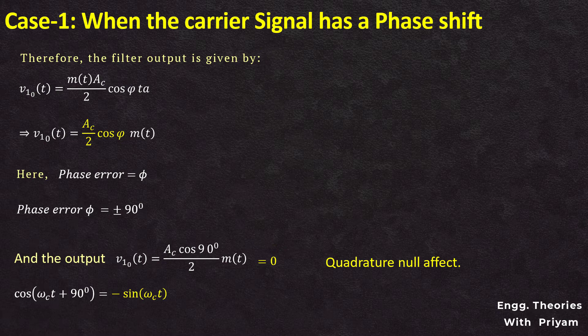As long as the phase error is constant, the detector provides an undistorted message signal MT. In practice, however, the phase error φ varies randomly over time due to random variation in the communication channel. As a result, the multiplying factor cos(φ) also varies randomly, which is undesirable. Therefore, the local oscillator in the receiver must be synchronized in both frequency and phase with the carrier wave used to generate the DSBSC signal in the transmitter. This system complexity is the price paid for suppressing the carrier to save transmitted power.